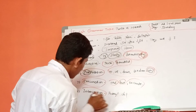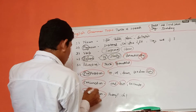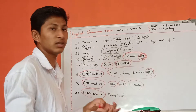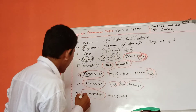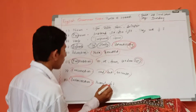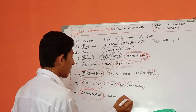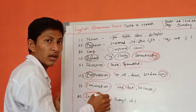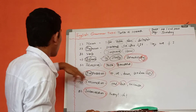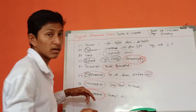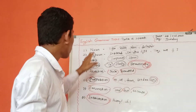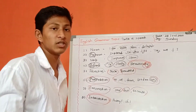Interjection means it will show sudden feelings, strong feelings, or strong emotions — that you call Interjection. At that time you have to use interjection. I have written here: 'Oh' is there, and there are many more examples. I hope that you understood. I have written and also orally told you the definitions. Thank you so much.